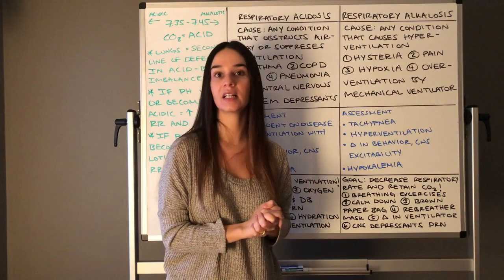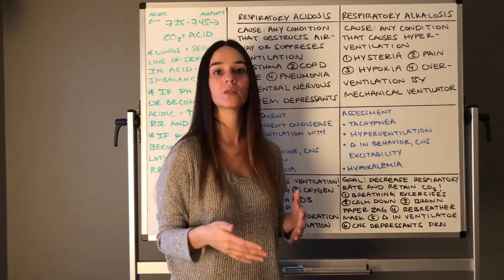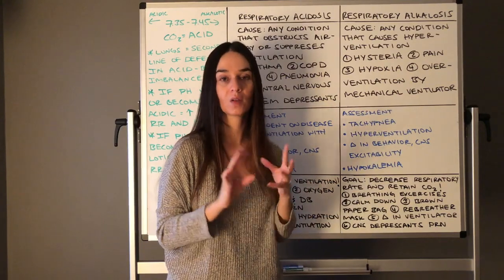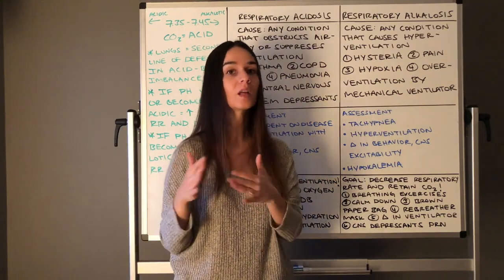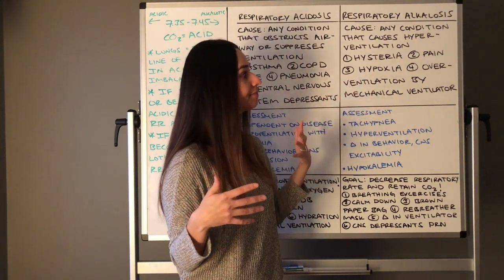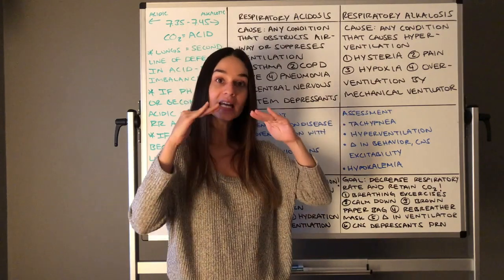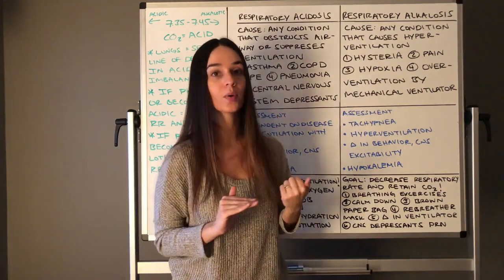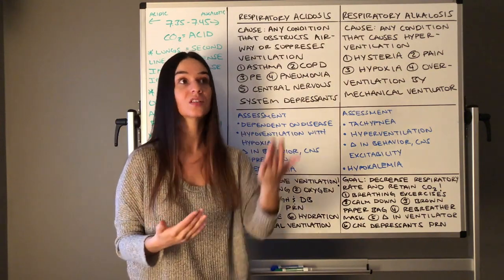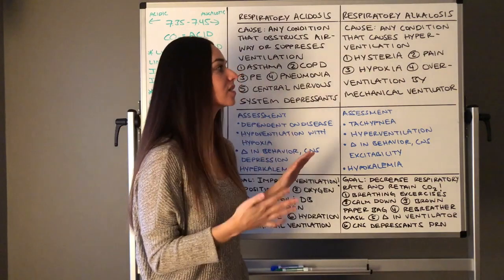Any disorder that causes hyperventilation can lead to respiratory alkalosis. Hysteria, anxiety, panic attacks, and mental health disorders are common causes. When in severe pain, respiratory rate increases, and hyperventilation can occur. Hypoxia — decreased oxygen — can also trigger this: if we have low oxygen, the body tries to breathe faster and deeper to get more oxygen in, but may end up blowing off too much CO2 as well, leading to respiratory alkalosis.